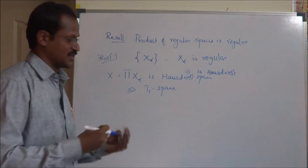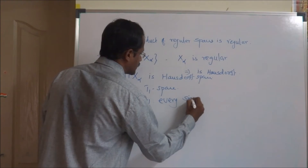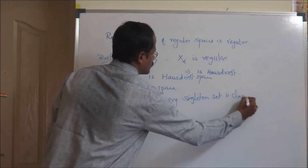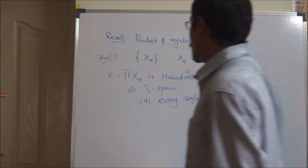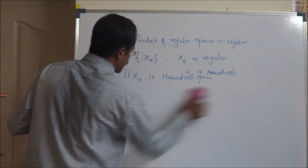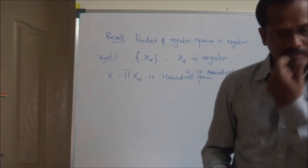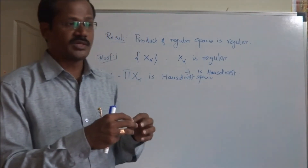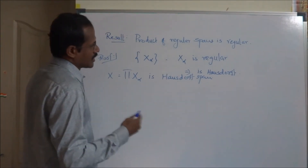So in ∏X_α every singleton set is closed — that is the first criterion we need to prove that the product space is regular. Now to prove the second condition — that a point and a closed set not containing it can be separated by disjoint open sets — we are going to use the characterization theorem discussed in previous videos: a T1 space is regular if and only if for every point x and neighborhood U_x of x there is another neighborhood V of x such that the closure of V is a subset of U_x.